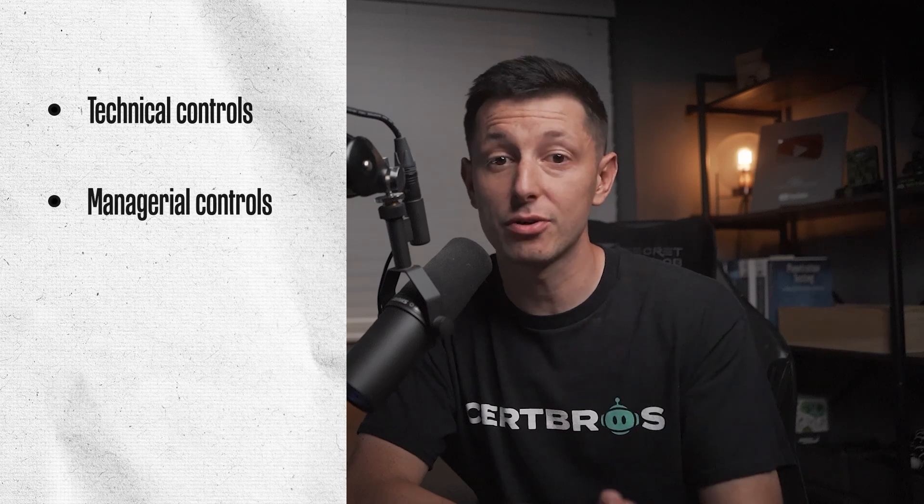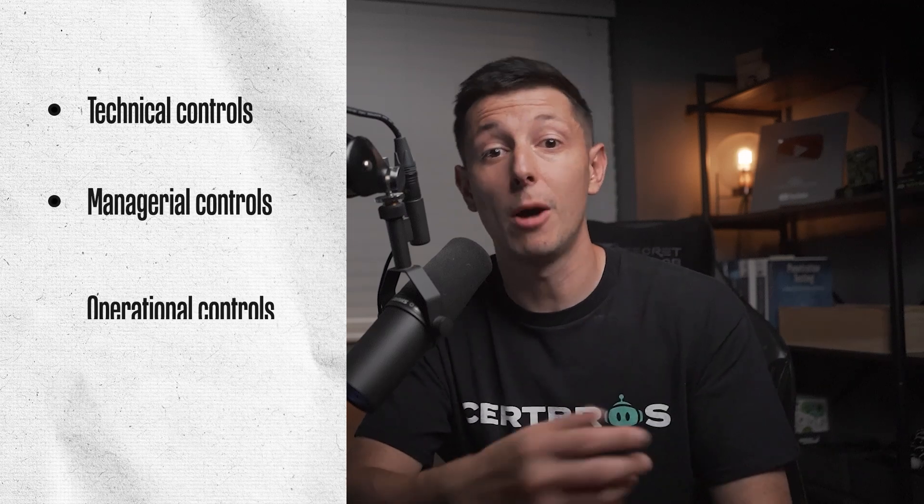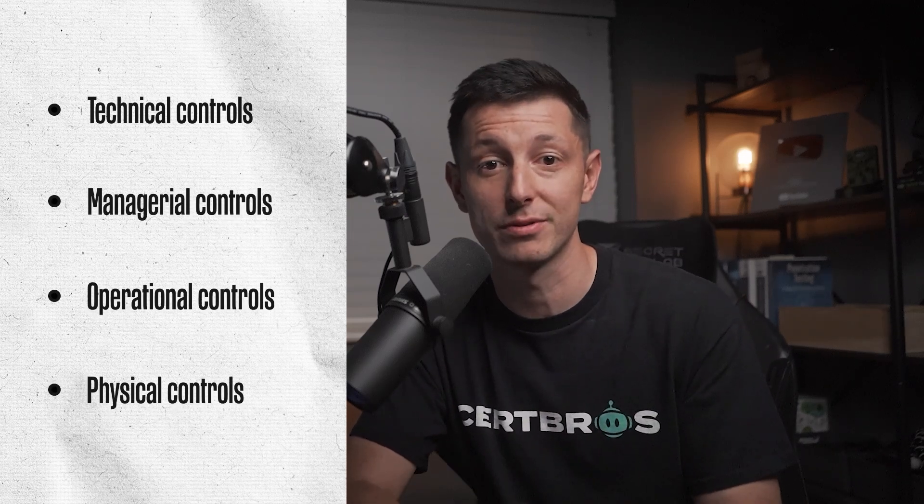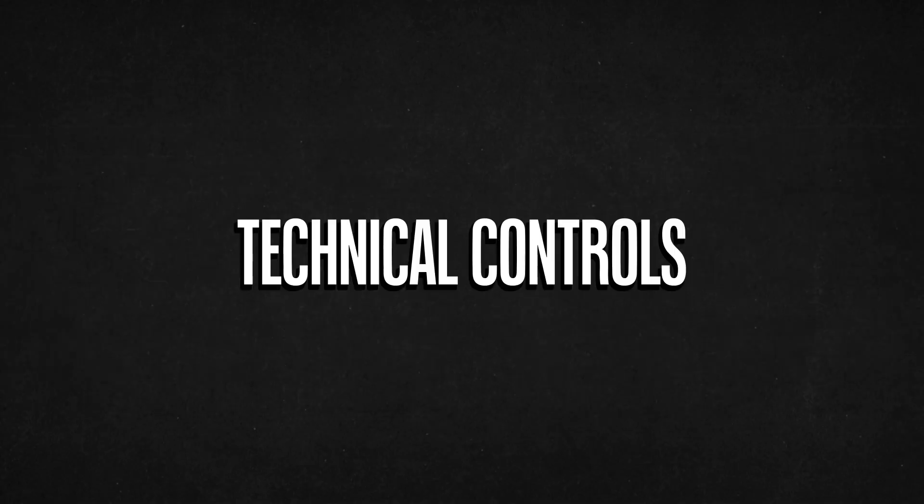The controls we put in place are split into four main categories: technical controls, managerial controls, operational controls, and physical controls.